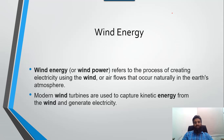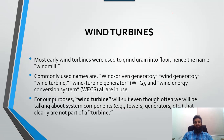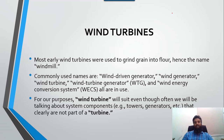Modern wind turbines are used to capture kinetic energy from the wind and generate electricity. The common name for the wind turbine is basically the wind mill. There are other names which are normally used: wind driven generator, wind generator, wind turbine, wind turbine generator, and wind energy conversion system. Specifically, the word wind turbine doesn't mean that it just has a turbine — it has other parts which combine with the turbine to produce electricity.